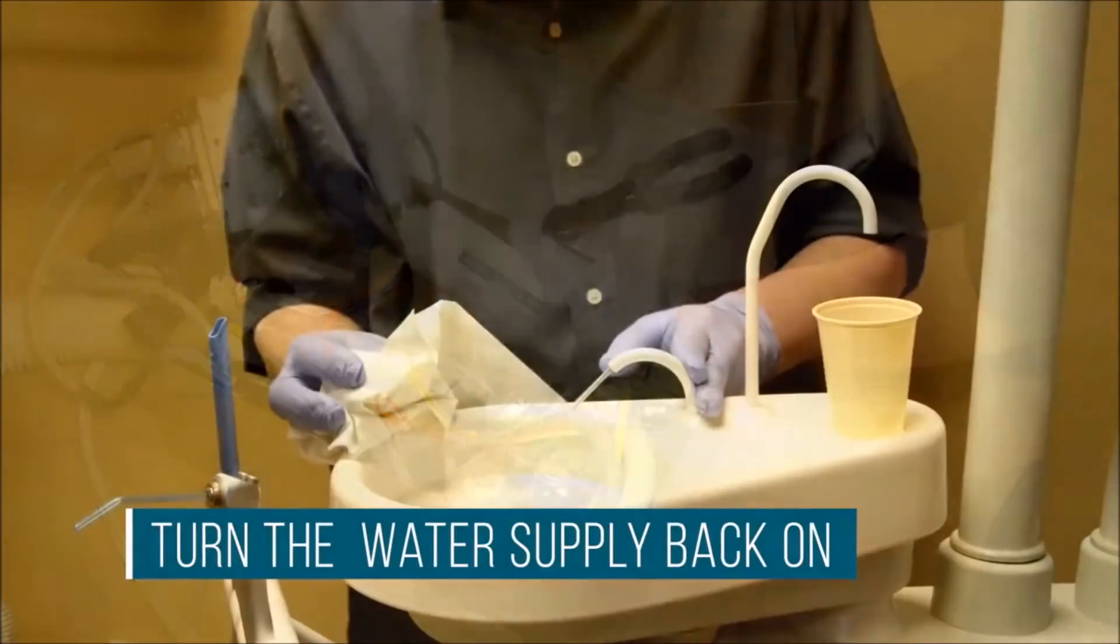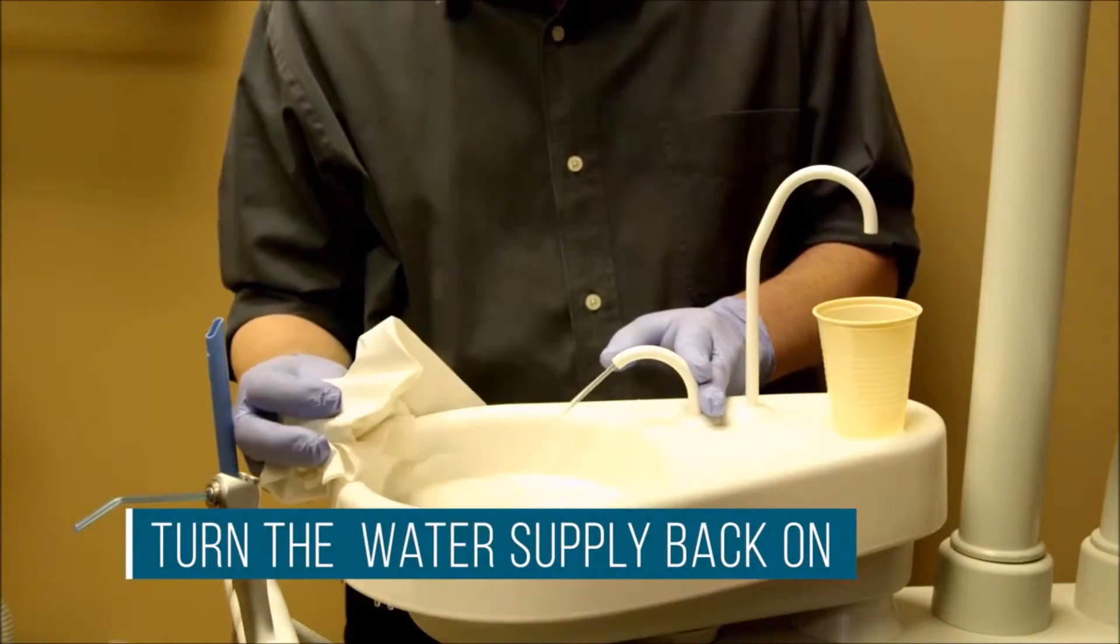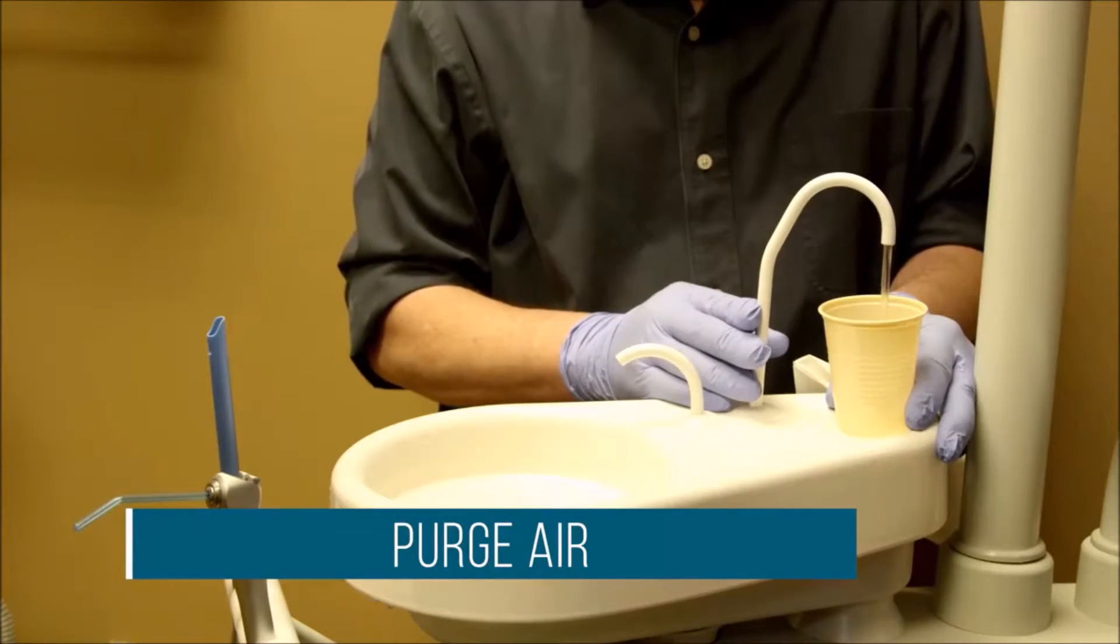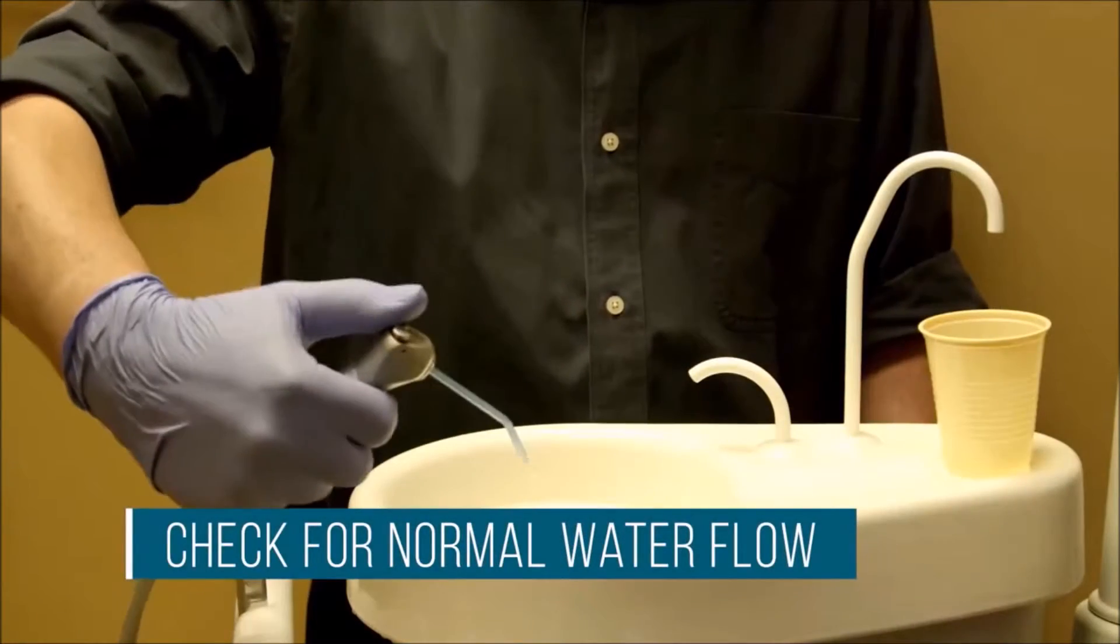Finally, turn the water supply back on and activate hand pieces to purge any air that might have entered the system. Check for normal water flow.